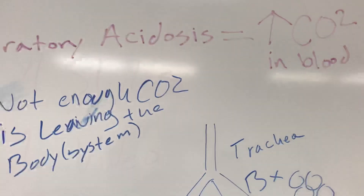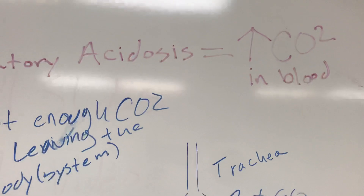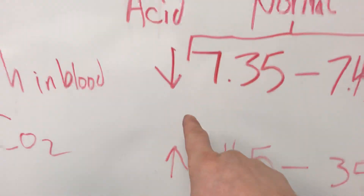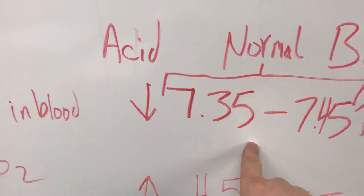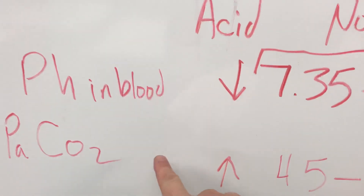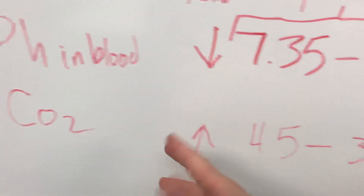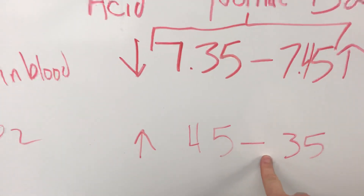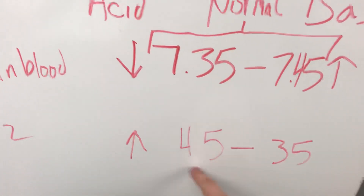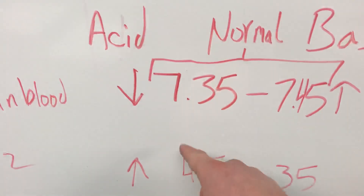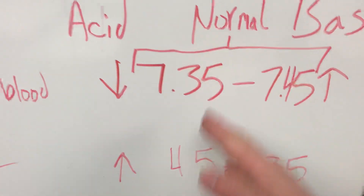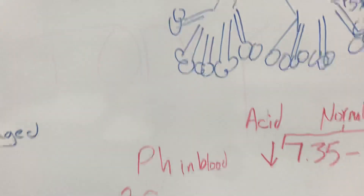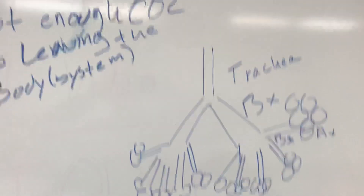Let's get some numbers so you know when your patient is actually in respiratory acidosis. As far as the pH in the blood, if it's below 7.35 your patient is acidic. The normal levels for CO2 in the blood are between 35 and 45. If the measurement is above 45, then your patient has respiratory acidosis.